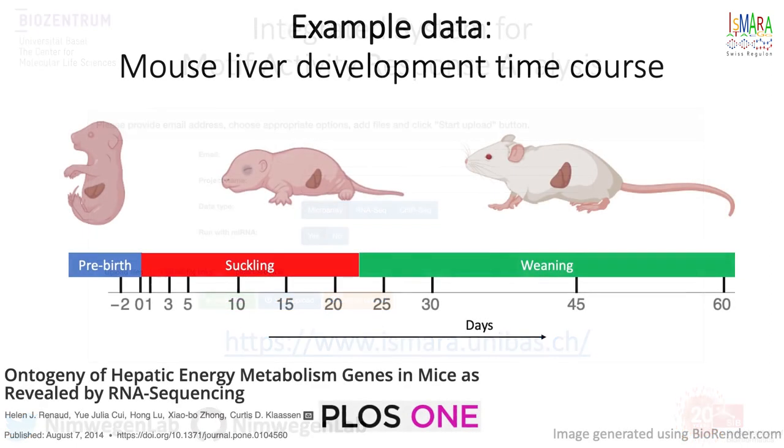For today's video, I chose as example the dataset from Renaud et al., who studied the dynamics of gene expression in mouse liver from just before birth until early adulthood. RNA-seq data were obtained at 12 time points, from 2 days before birth until 60 days after birth, which correspond to the pre-birth, suckling and weaning stages of development. We took the raw RNA-seq reads from this publication and uploaded them to the ISMARA web server.